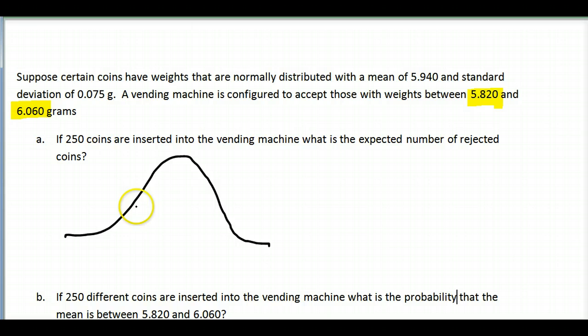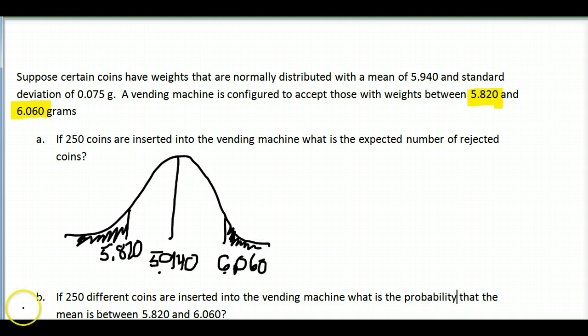We want to look at what's going to be rejected, essentially, remembering that our average is 5.940. It's going to reject anything below 5.820 or anything above 6.060. So that's what it's going to reject or not accept for payment. We'll go ahead and just color those pink to make it clear.